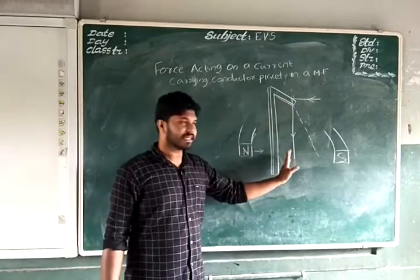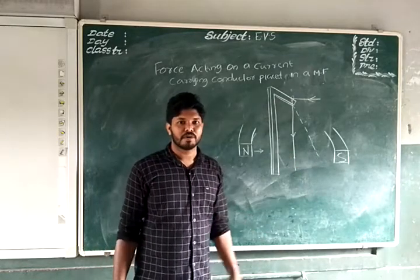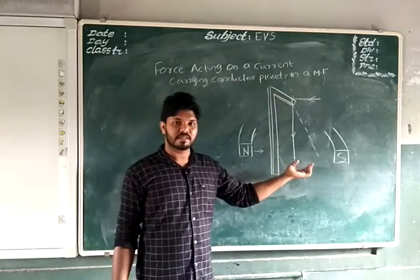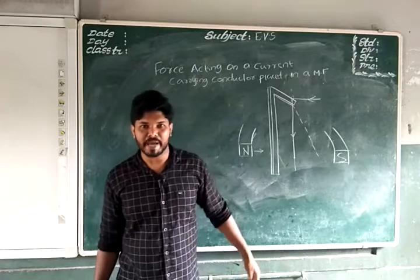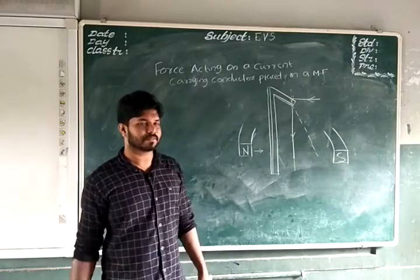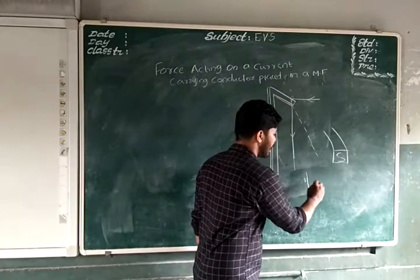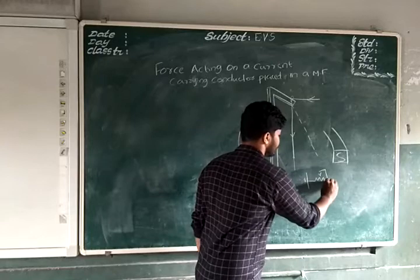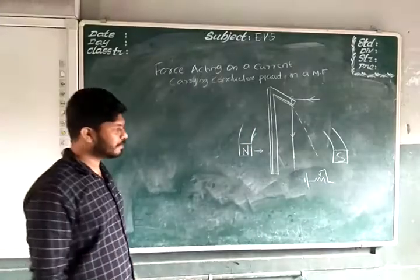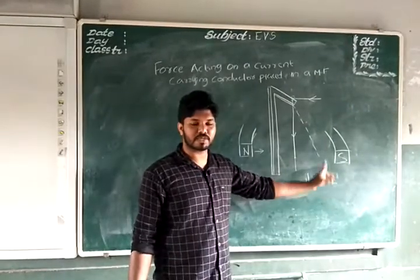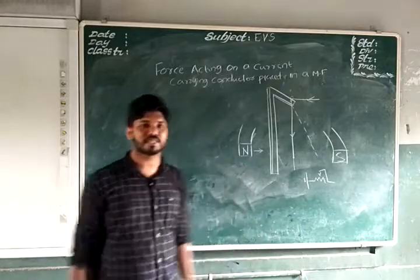The hanging conductor experiences a force and we can see motion due to that force in the forward direction or in the backward direction according to the direction of current. Here we have a battery connection and a rheostat in order to increase or decrease the current. It is found that when we increase the current passing through the conductor, the motion or the force experienced by the conductor also increases.